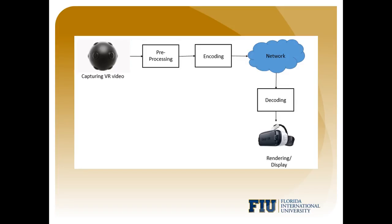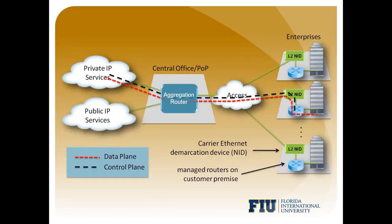That's a general conception of the networking status for that. This is a general idea of using networking — you have private IP and public IP services going through a central office or router, through to the access point into different network interface devices, carried over the different planes. You have data and control plane going into the different enterprises.